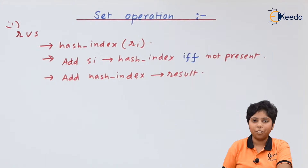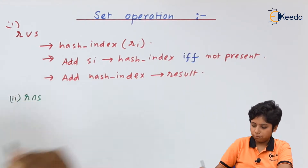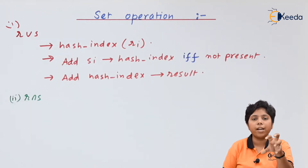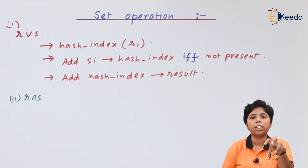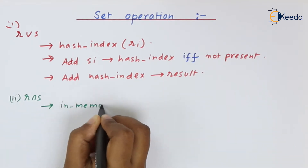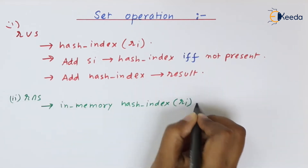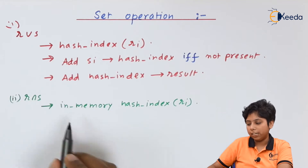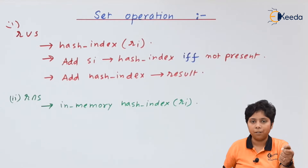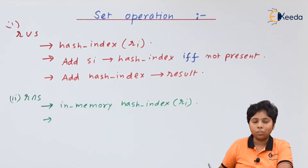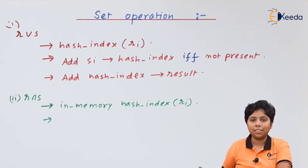Next is the intersection operation. In query processing, intersection takes ri and finds all common tuples with si, then puts into the hash index the values belonging to different parts of ri and si. We build an in-memory hash index — meaning it is already in memory and does not need to be fetched from disk. After the hash index is built, we add a tuple to si if it is already present in the hash index.